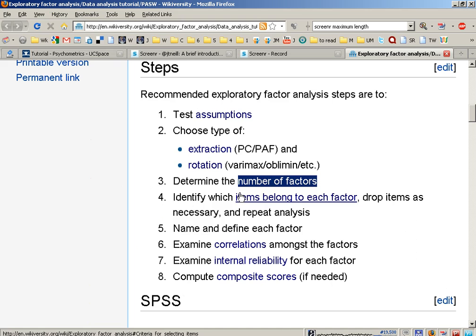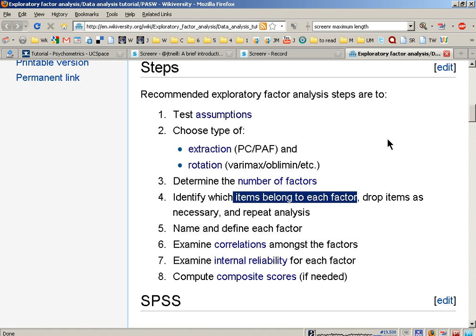Once you've decided how many factors there are, you can then look at which items belong to which factor. Primarily, if we're looking for a simple factor structure, we're looking to see whether each item has a high loading on one factor and relatively low loadings on other factors.